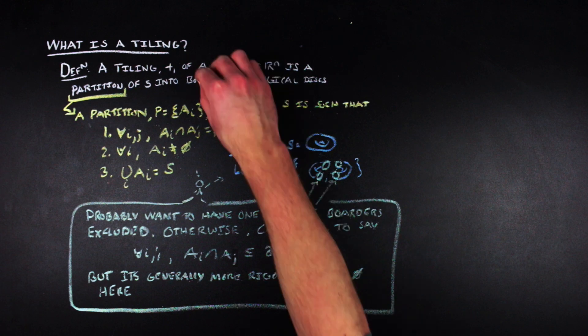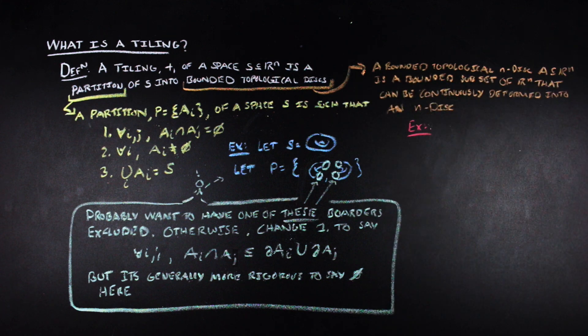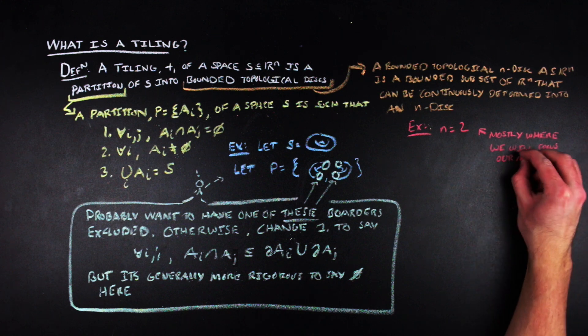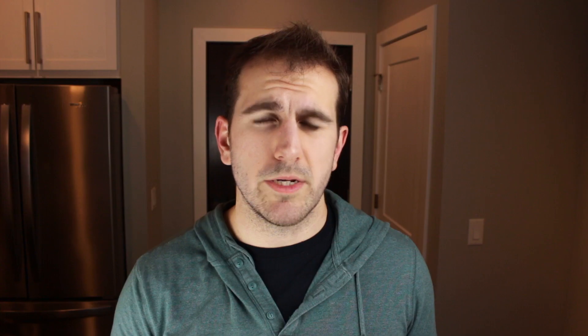We should also talk about bounded topological disks. A bounded topological n-disk is a subset of R^n that can be continuously deformed into an n-disk. If n is 2, then some topological disks include pentagons, squares, triangles, and hexagons — all of which can be continuously deformed into a circle with its interior, because it's a disk and you have to include the interior. For what we'll be working with, we'll mostly be sticking to shapes like these and other convex polygons.